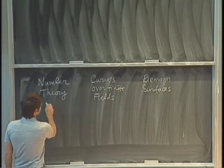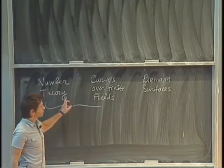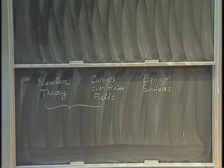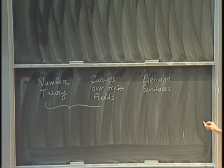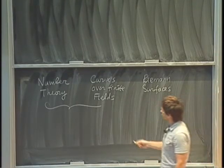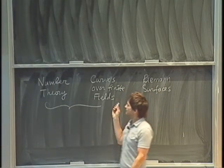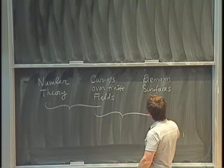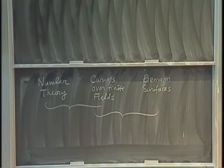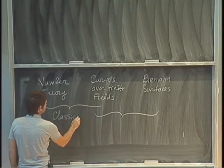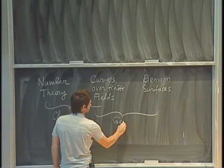The origin of the Langlands program is in these two tracks, where you talk about Galois groups of a number field such as the field of rational numbers, and also Galois groups of the function fields of curves. Sometimes people refer to this as the classical Langlands correspondence. Then there is something more recent which involves geometry — this is the geometric Langlands program.